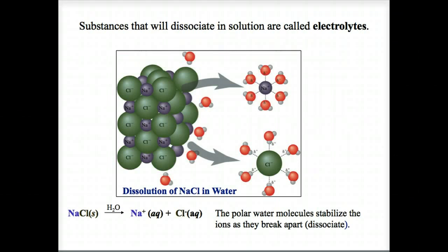Ions dissolved in water are said to be hydrated — that is, surrounded by water molecules. When salts dissolve in water to form aqueous solutions, they form ions that can conduct electricity. Electricity is the movement of electrons.